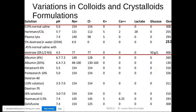Dextrose — 5% dextrose in water, either with normal saline or 0.45% saline — will obviously contain glucose. Remember that dextrose saline fluids are not isotonic — particularly note the osmolarity of half-strength normal saline. If you add potassium or other additives, the osmolarity goes up further, creating challenges for peripheral vein administration.